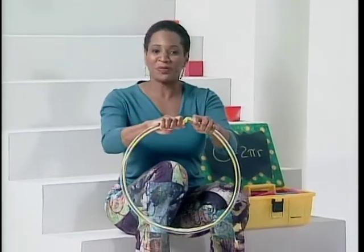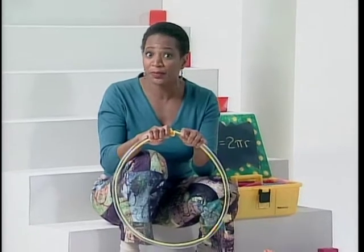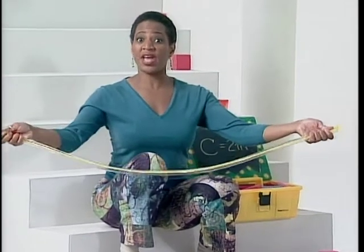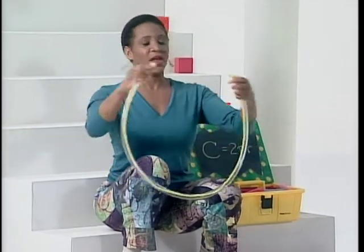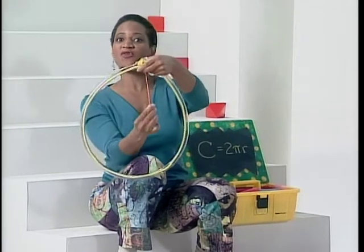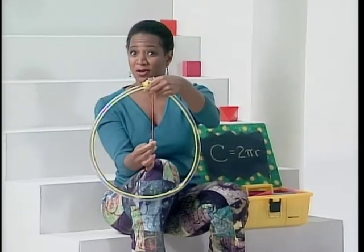Circumference is the distance around a circle. It's a linear measurement like perimeter — the length of the edge or outline of the shape. The radius is the distance from the center to the edge of a circle.